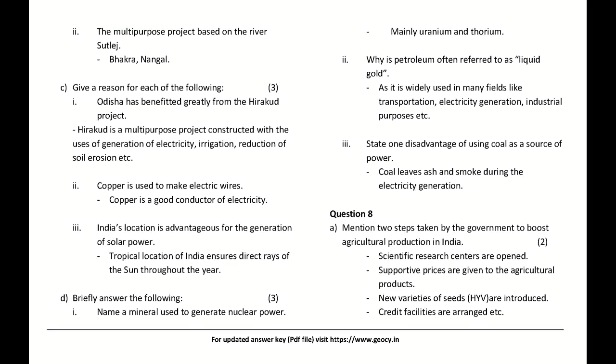Mention two steps taken by the government to boost agricultural production in India. Answer: Scientific research centres are opened, supportive prices are given to agricultural products, new varieties of seeds (HYV) are introduced, and credit facilities are arranged.